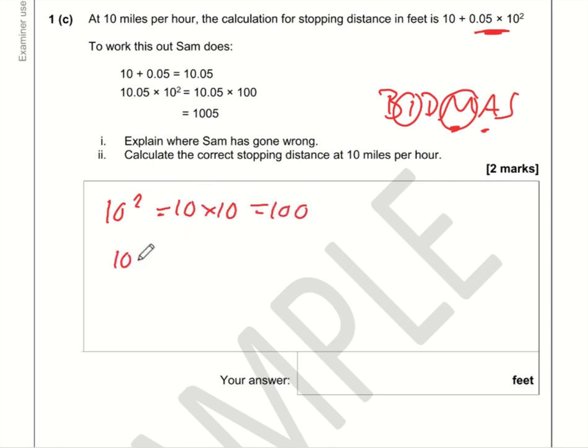So 10 squared is 10 times by 10, which is 100. So we've now got 10 + 0.05 × 100. So we do the multiplication first: 0.05 times by 100 is 5. So the question is 10 + 5, which is 15, so 15 feet, which seems a more reasonable stopping distance for quite a slow speed. 1005—that is a big distance.